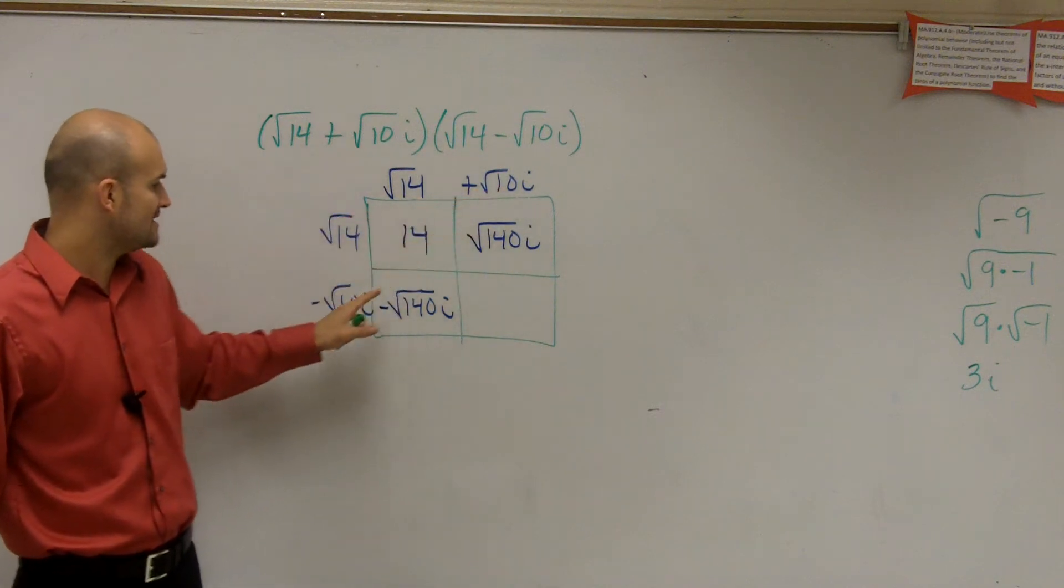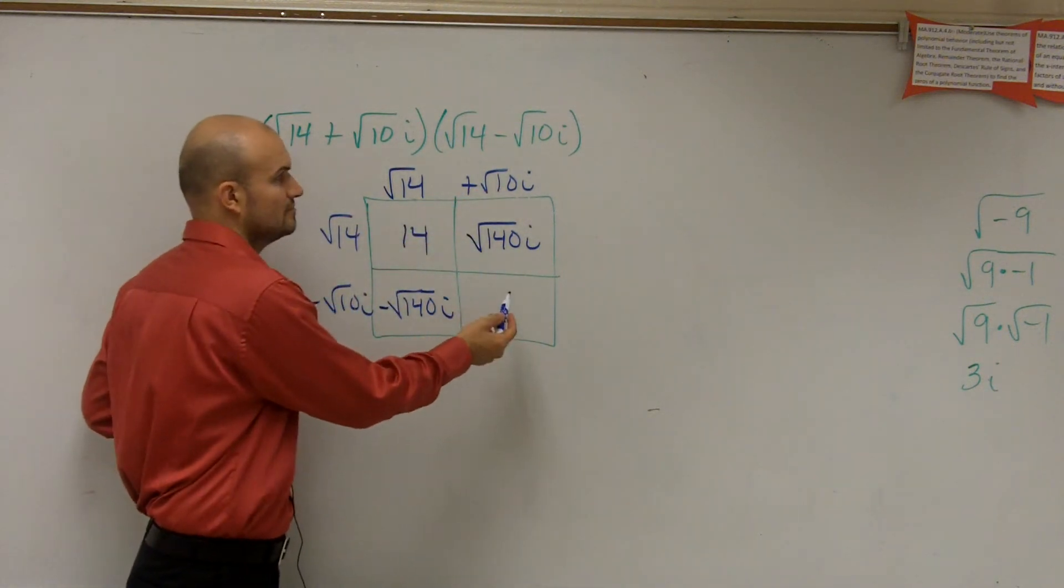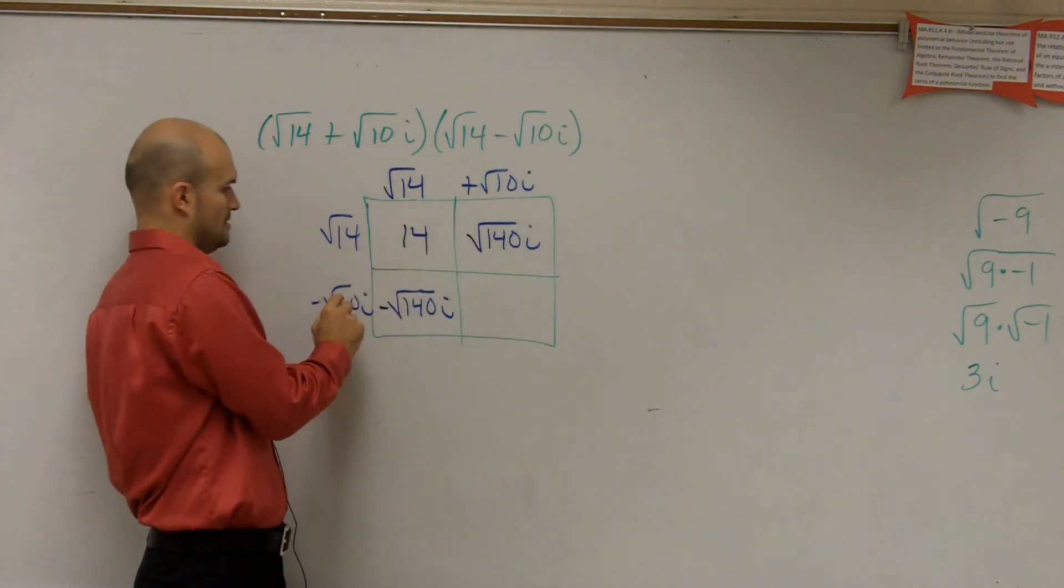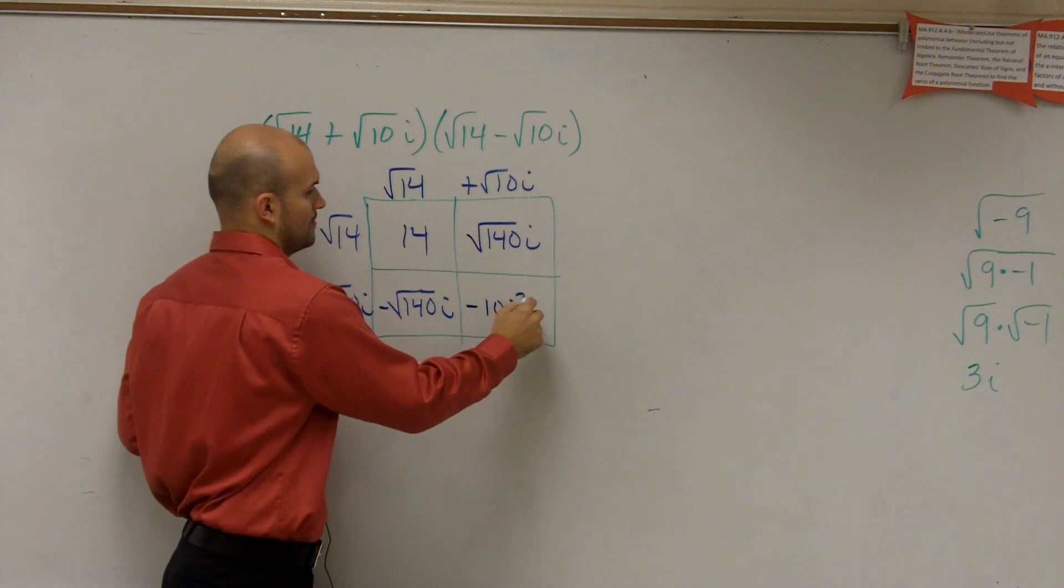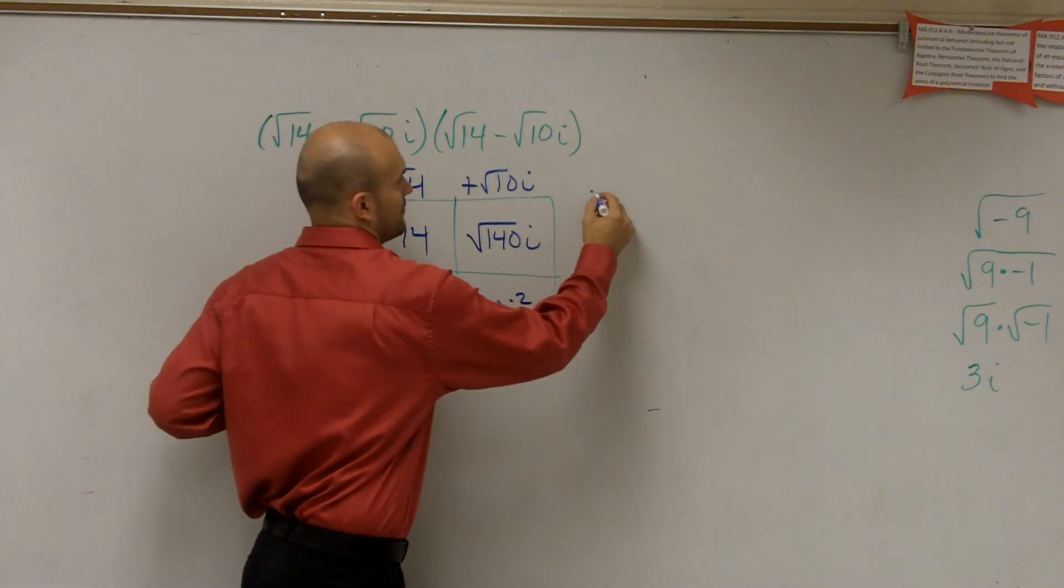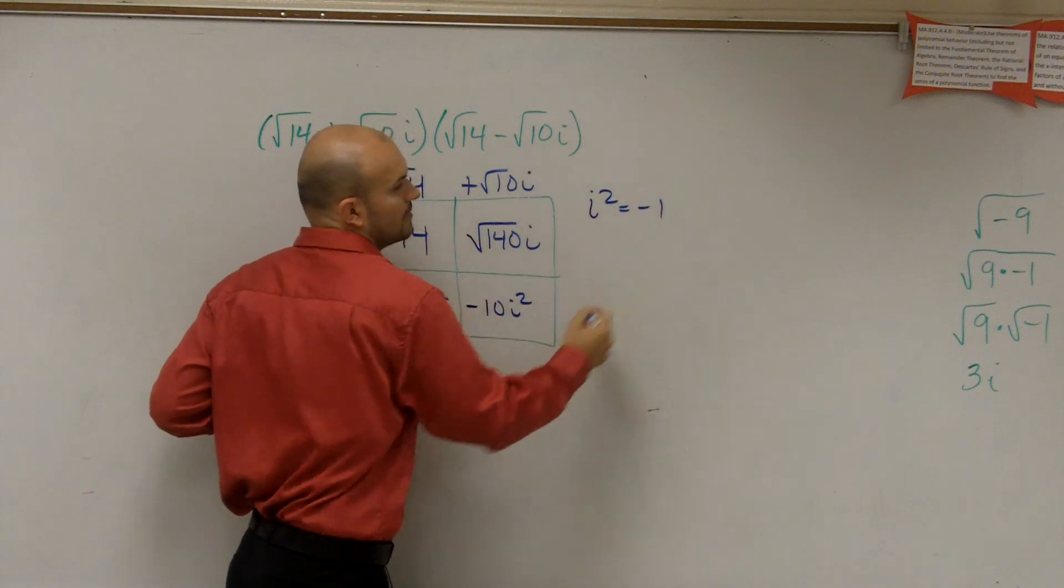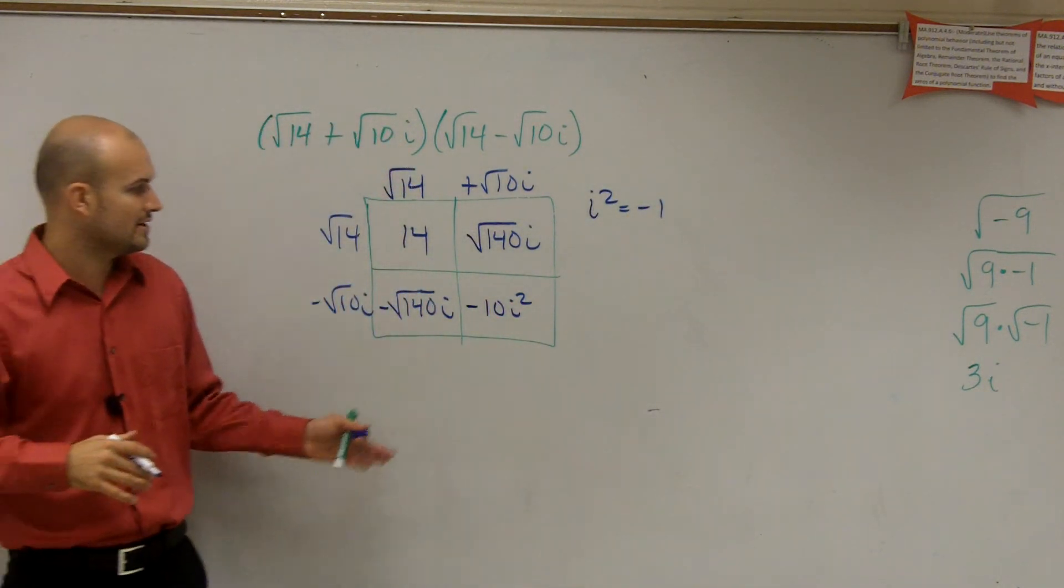And then here, I have the square root of 10 times the square root of 10, or the negative square root of 10 is going to be the negative 10i squared. Right? And then remember, i squared we said represented negative 1, right? I already went through that. i squared equals negative 1.